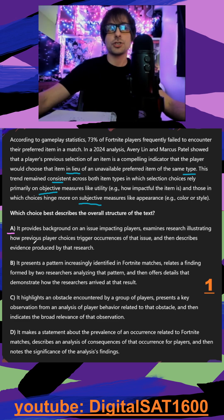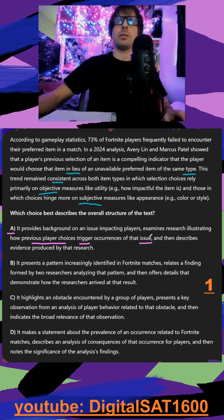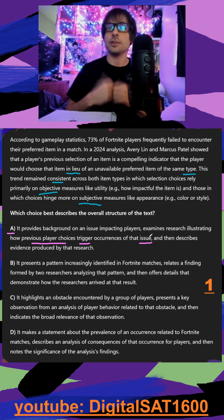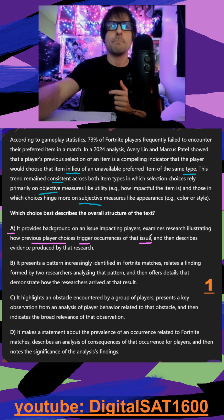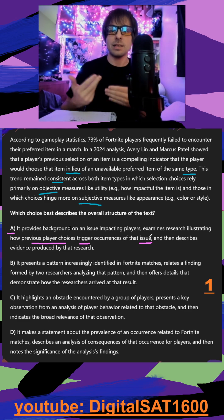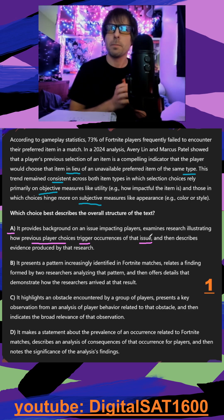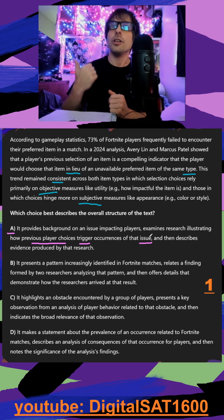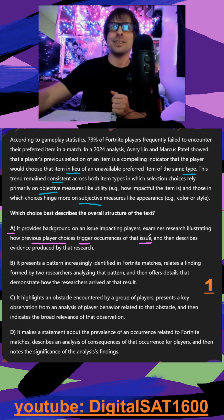It examines research illustrating how previous player choices trigger occurrences of that issue. Let's break that down. The issue in our example was I was unable to find grenades, my preferred item. My player choice was I would choose C4 — there was a big indicator I would choose C4 because of the type and I had previously chosen it. So me choosing C4 does not trigger there not being grenades in a match. This is just completely irrelevant, so not going to be A.